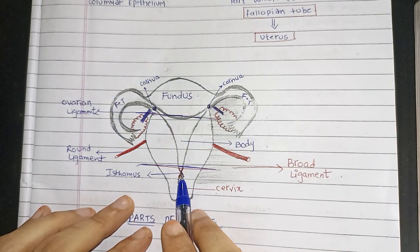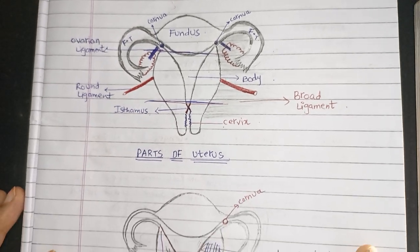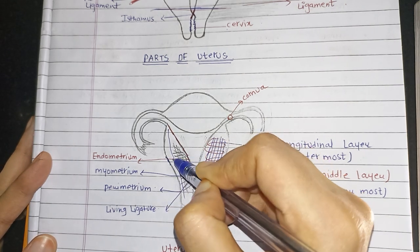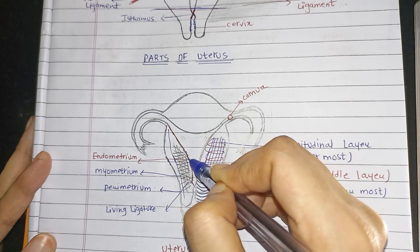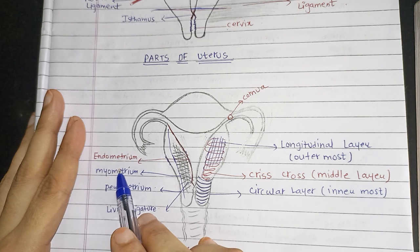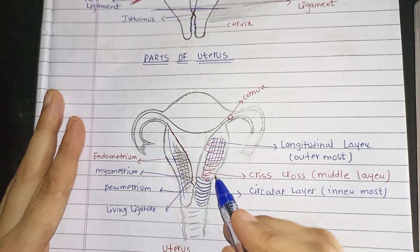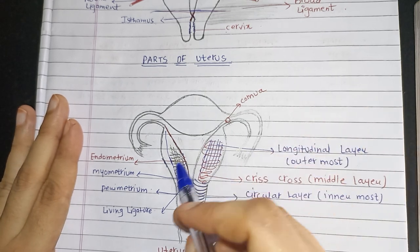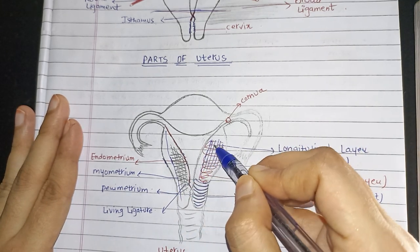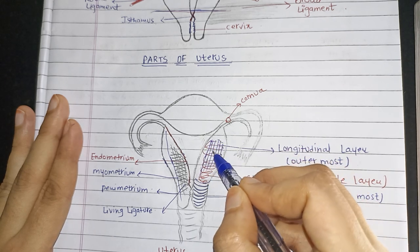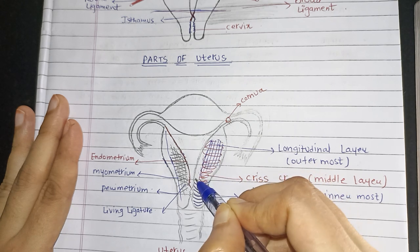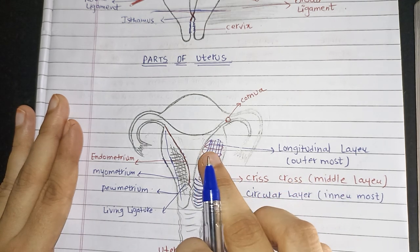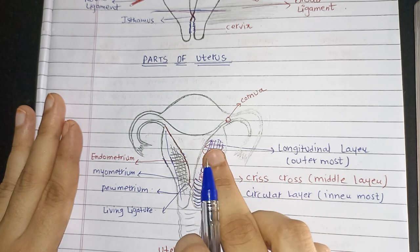So the parts are: fundus, body, isthmus, and cervix. Now let's understand from the diagram the layers of the uterus. The outer layer is perimetrium, the middle one is myometrium, and the inner one is endometrium. The myometrium, the middle layer, further has three fibrous layers: the outermost is longitudinal — I have drawn this just to help you understand — then the criss-cross layer (the red one), and the circular layer. The circular layer is the innermost, the longitudinal layer is the outermost, and the criss-cross layer is the middle layer.